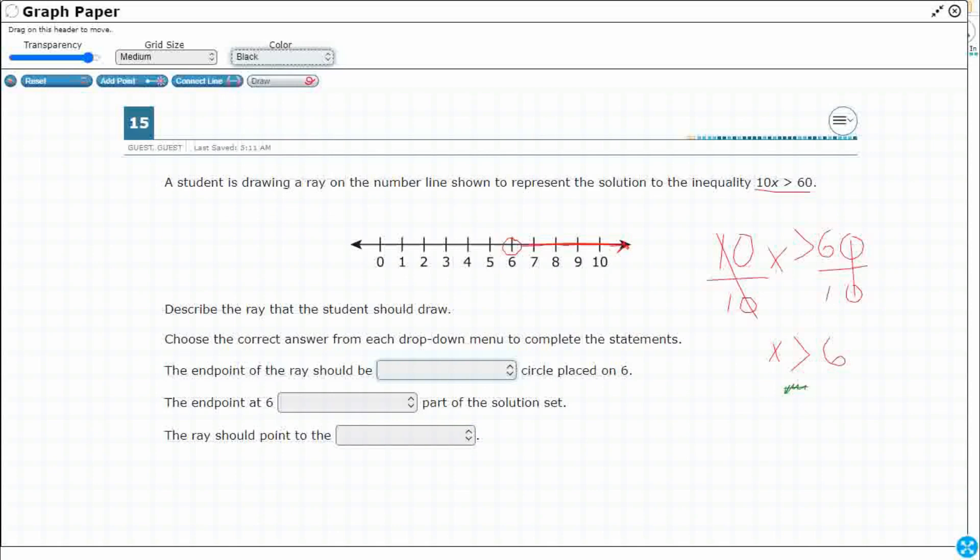So let's choose a number that's greater than 6. I'll go 10 because 10 is easy. Let me plug it back into the original one. So 10 times 10 is greater than 60. 100 is greater than 60. Yes. Okay.